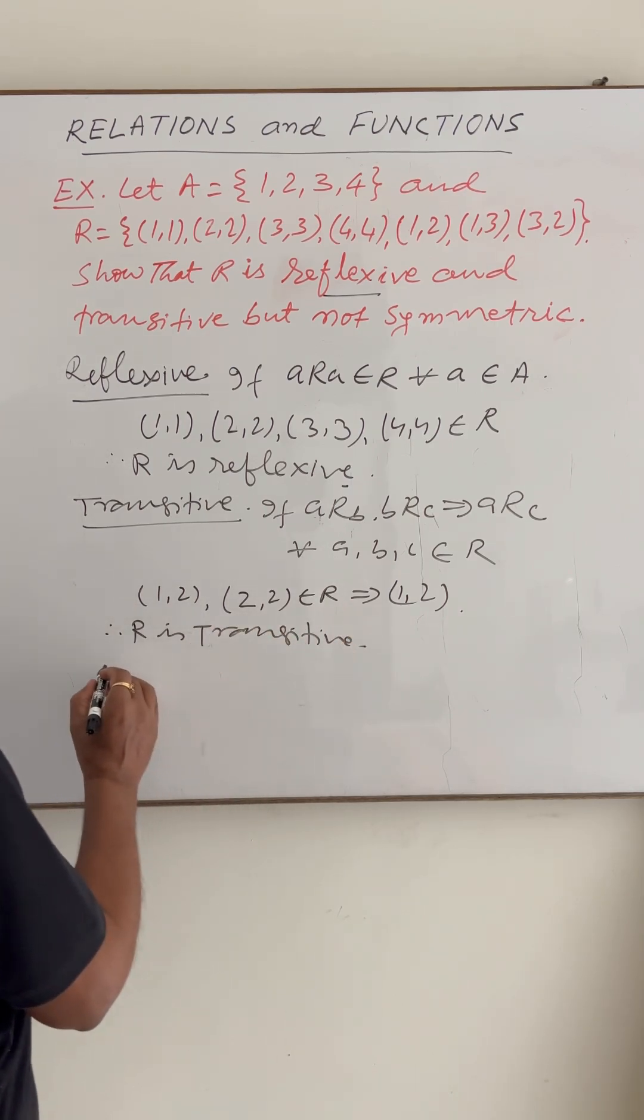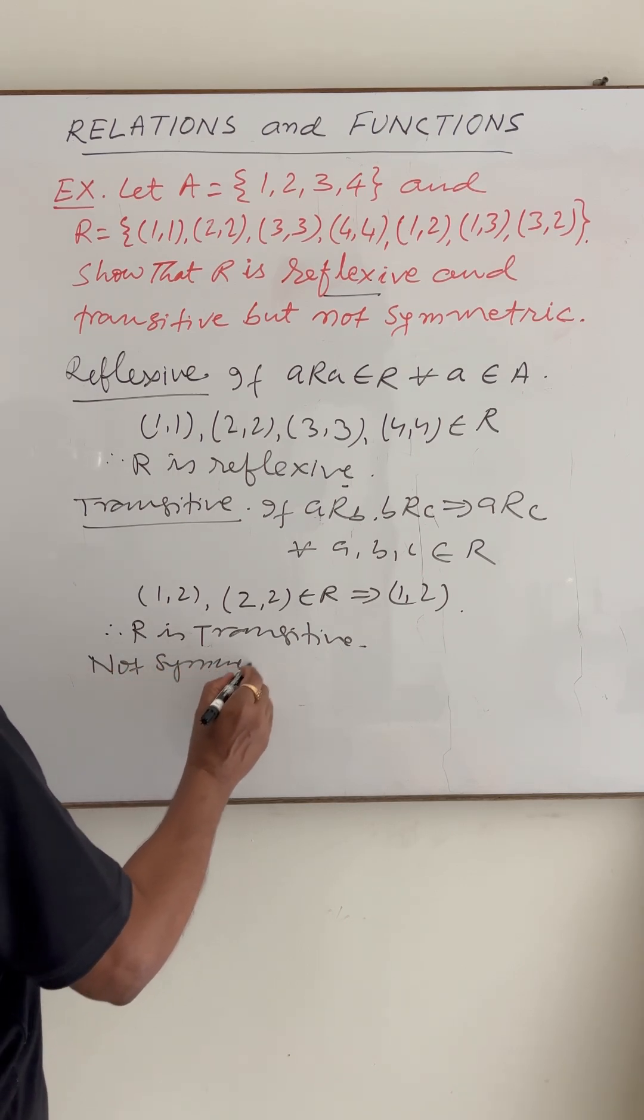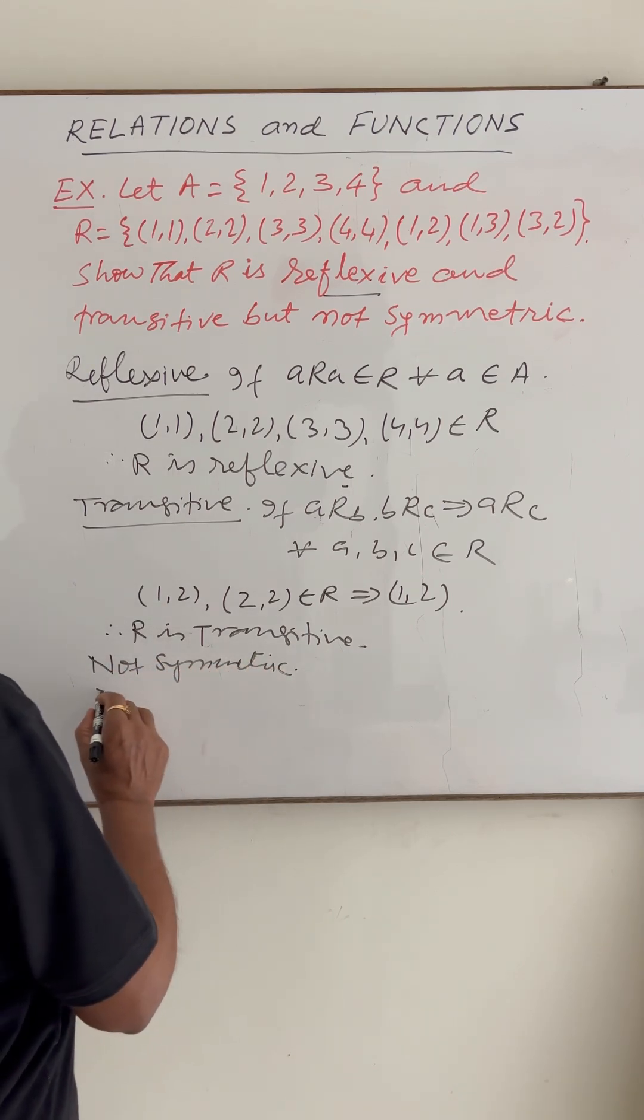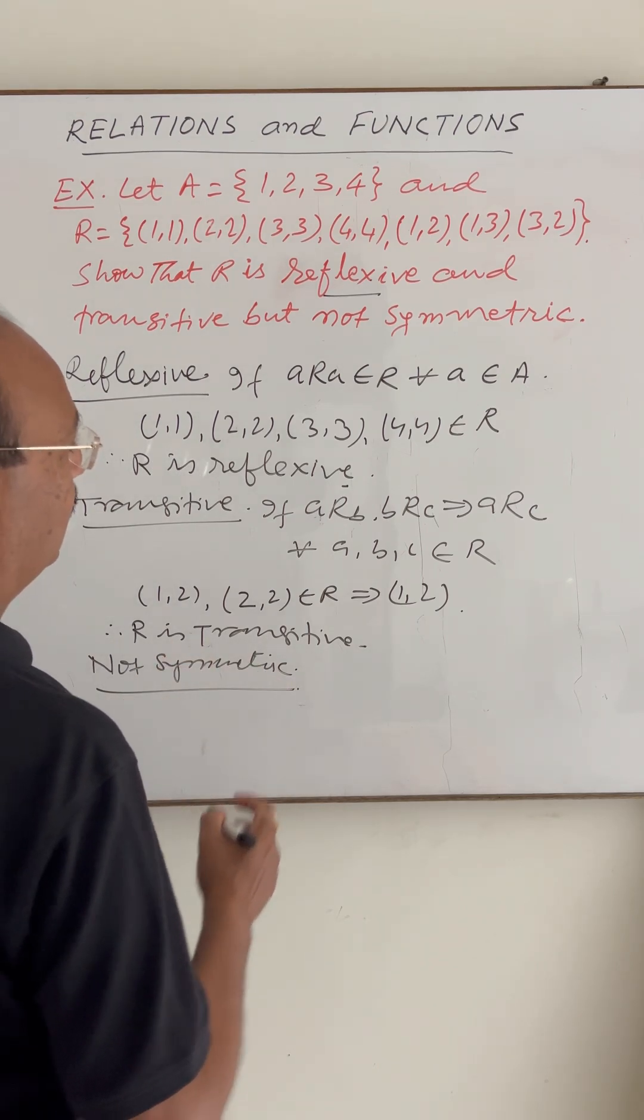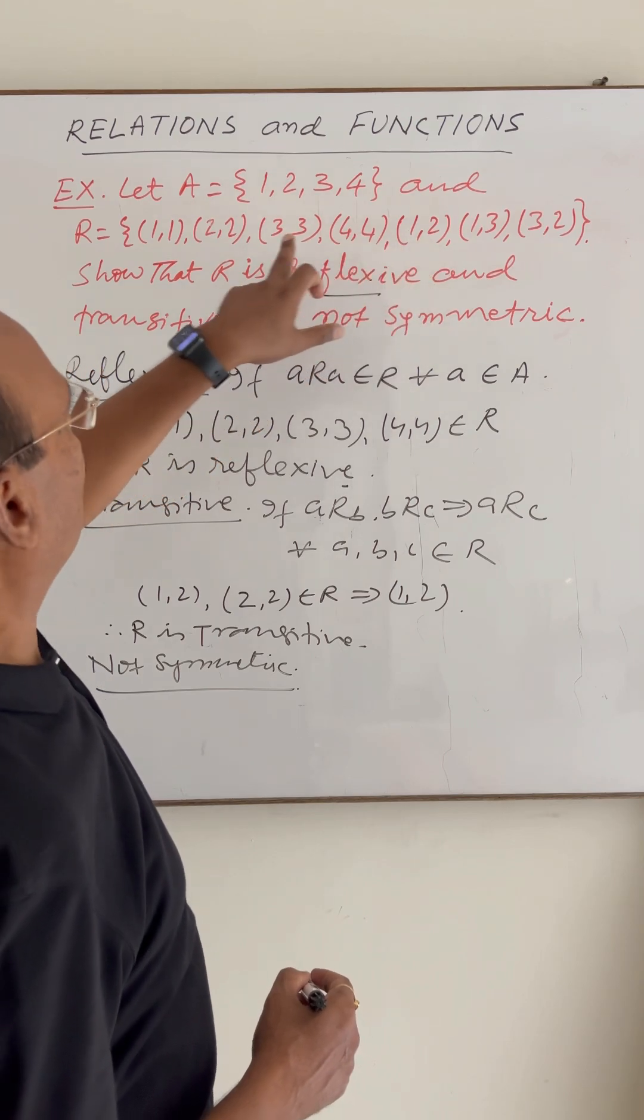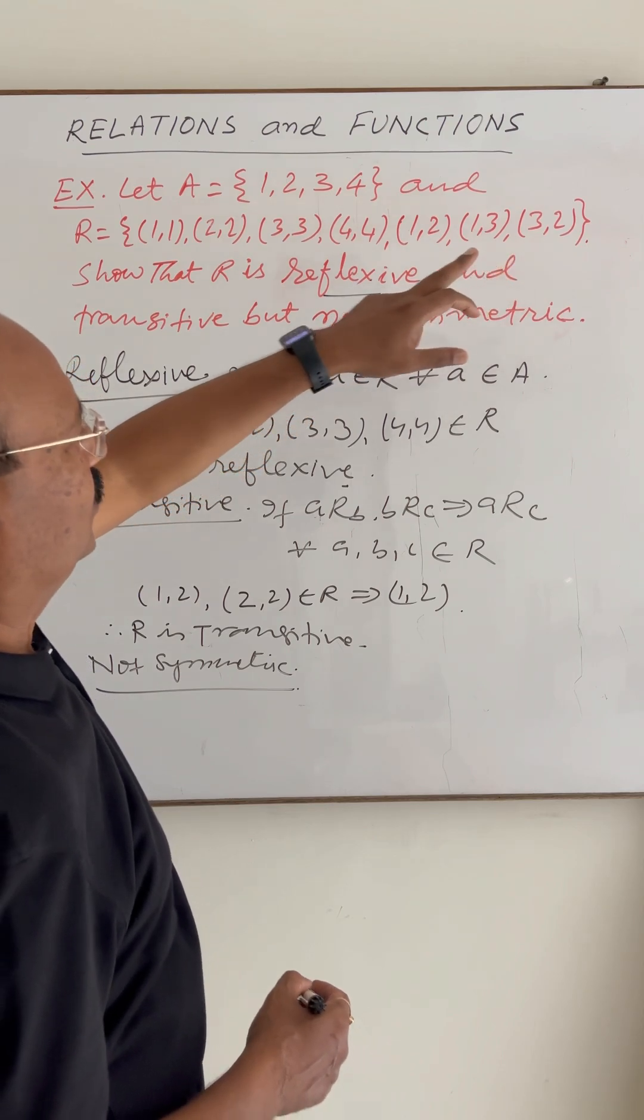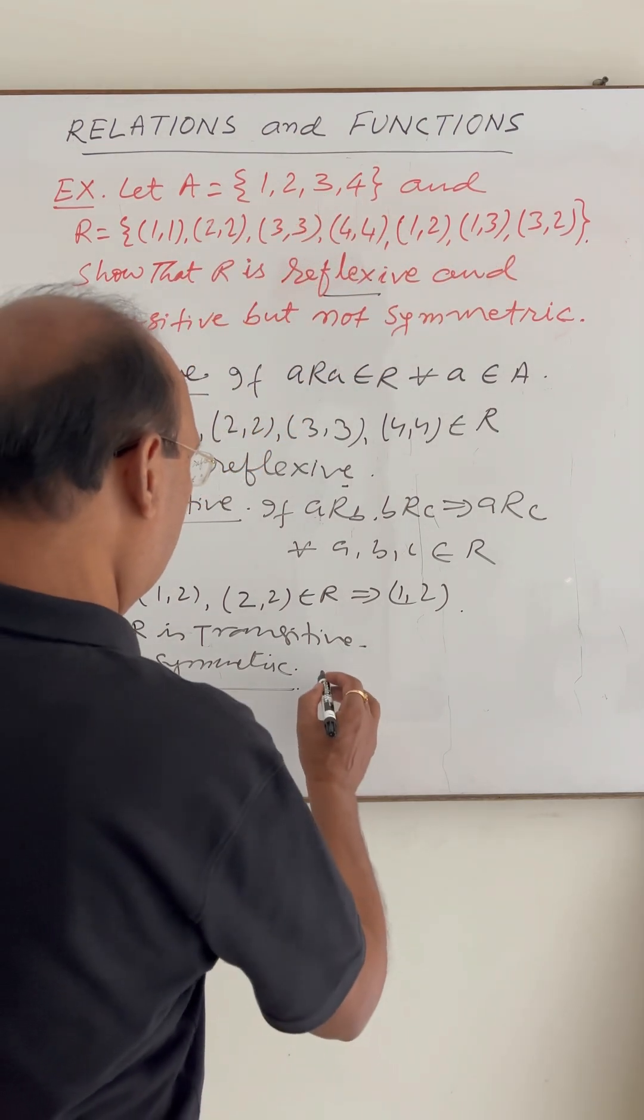Now we have to show that this relation is not symmetric. Okay, here you see (1,2) is here but there is no (2,1). Similarly, (1,3) is here, no (3,1). (3,2) is here, no (2,3).